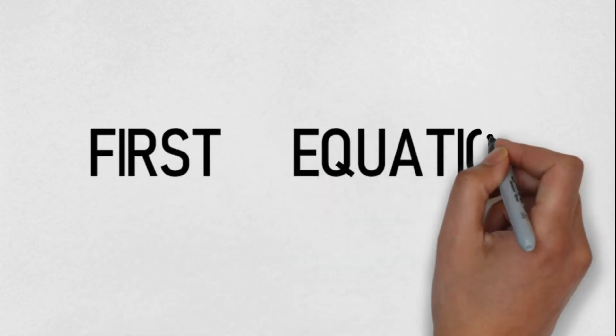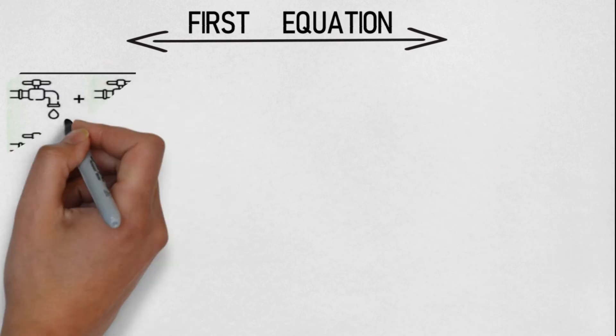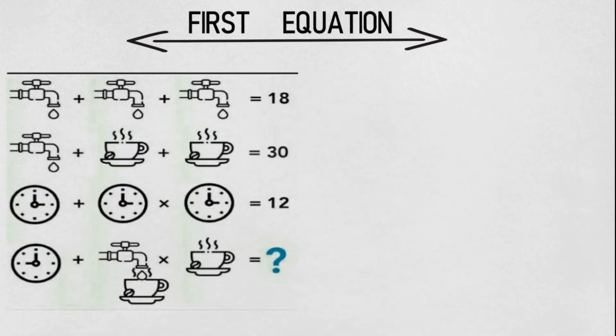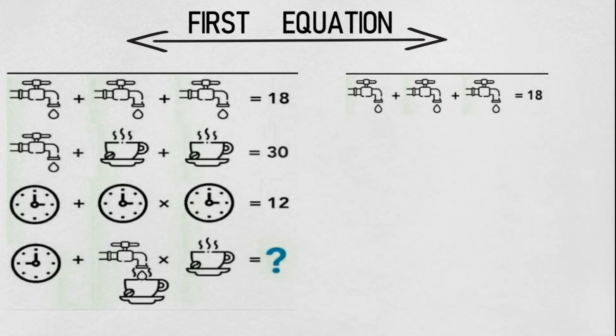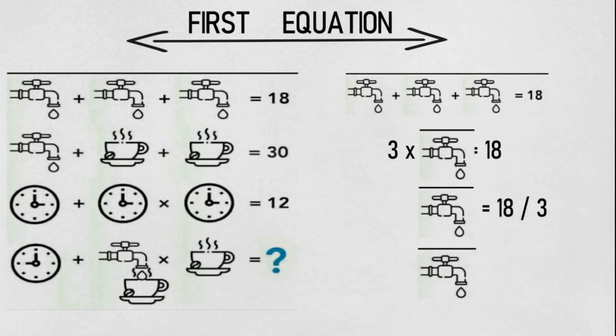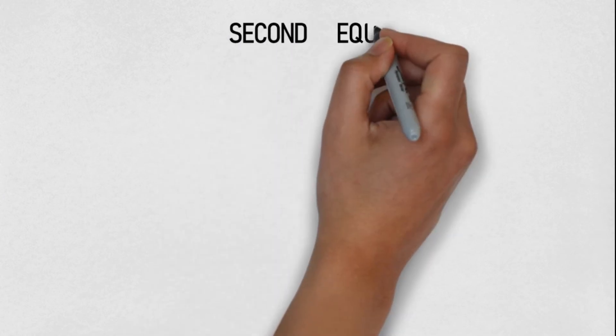Jumping on to our first equation. In the first equation we have three taps and sum of taps is equal to 18. So 3 times one tap is equal to 18. One tap is equal to 18 divided by 3, this is equal to 6. So friends, first equation says we have one tap value that is equal to 6.